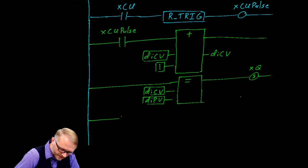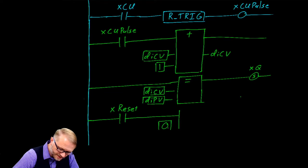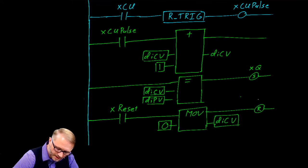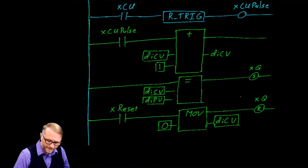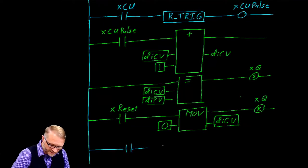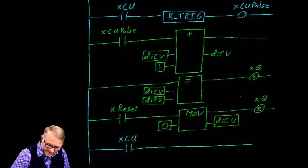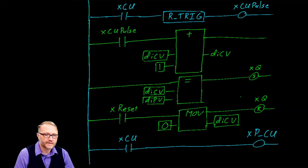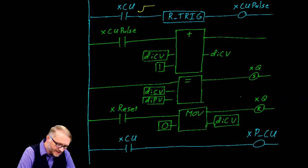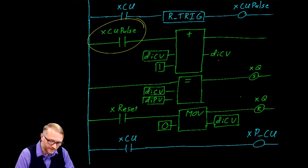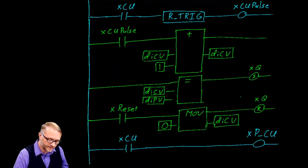The next rung is very simple — it's our reset rung where we move the value of 0 to memory location current value and reset our Q. Remember that the input and output of a move instruction — those lines are connected together. The last rung of the counter takes the value, the boolean count up, and places it into the boolean previous count up. Now let's see how we did. When we have an event — a rising edge on count up — there will be a pulse. If there is a pulse, we will increment the count by 1. We read the current value, modify it by adding 1, and write it back to current value.